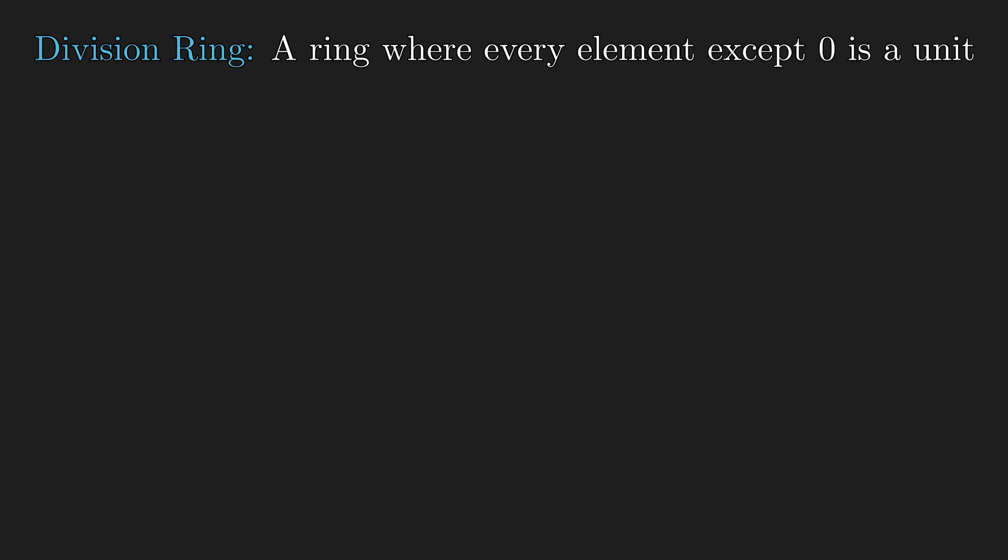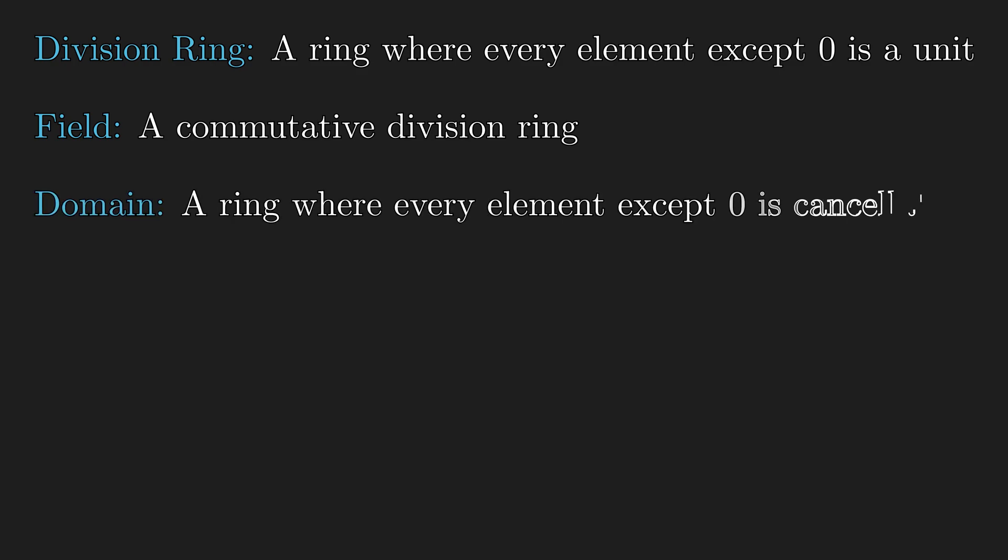So just like how we define division ring, which are rings where every element except for zero is a unit, and the field which is a commutative division ring, we can define a ring where every element is left and right cancelable. And we call it a domain. And it does nothing to do with domain of a function. But these poor ring theorists probably ran out of cool words to use. And we say a commutative domain is an integral domain. And this has nothing to do with this integral. And it's named after the integers since it is a commutative ring on which every element is cancelable.